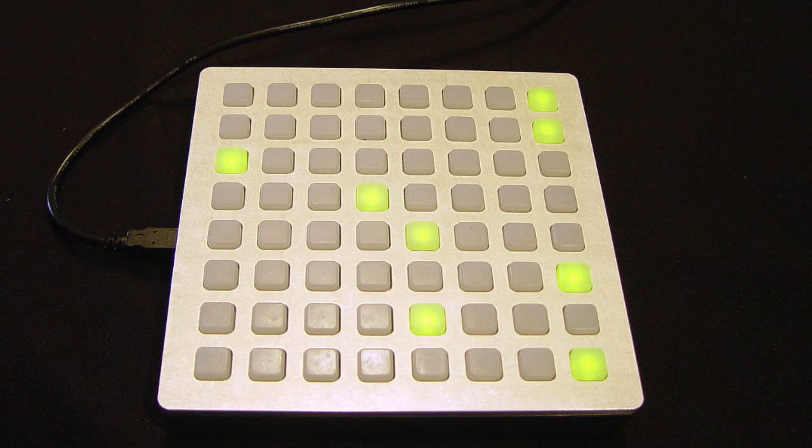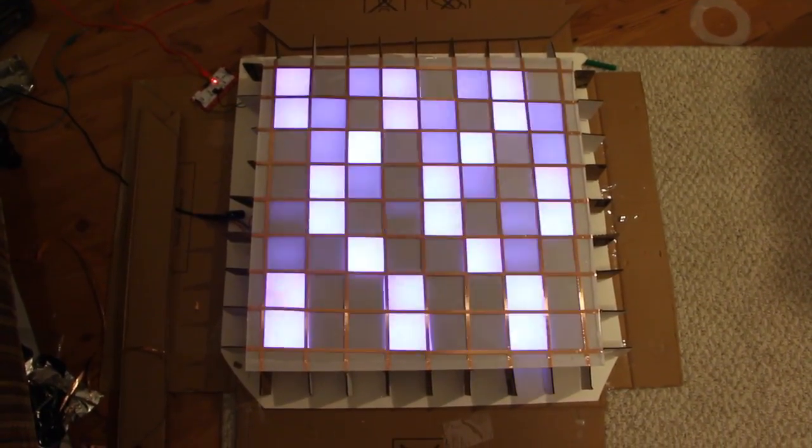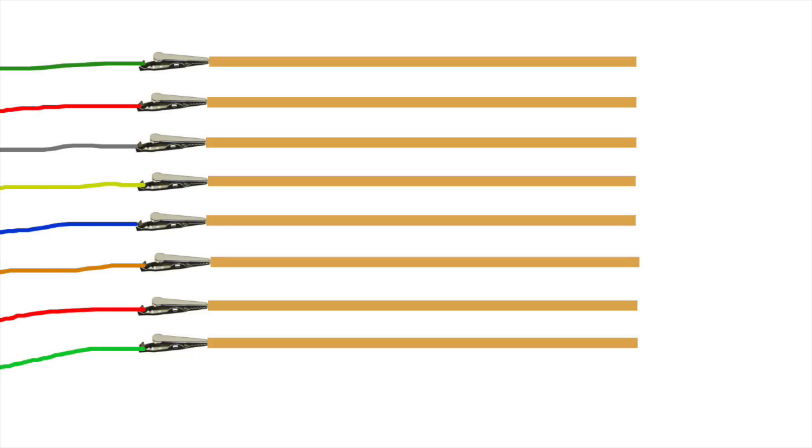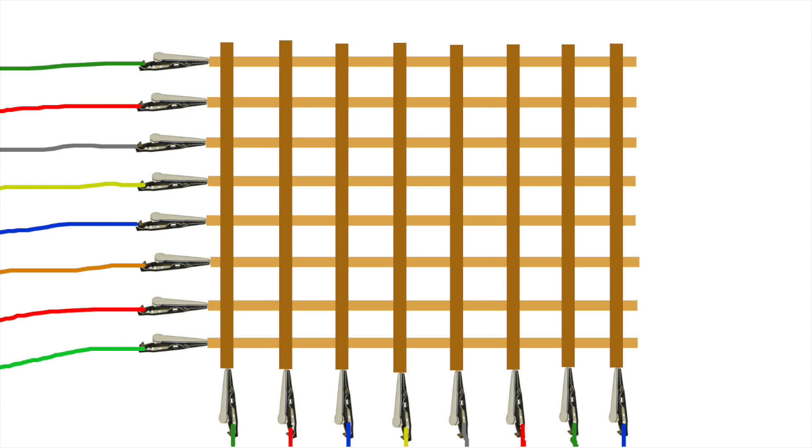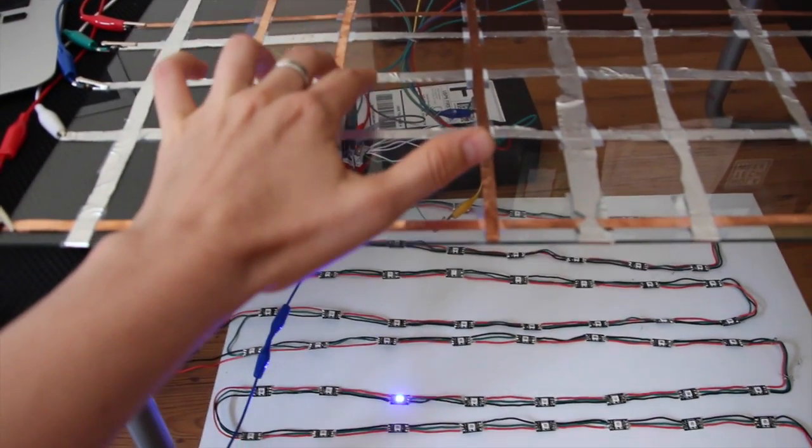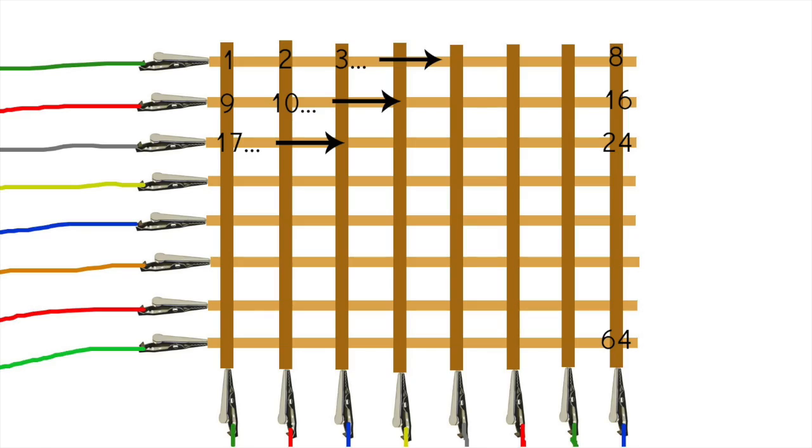We want to build an 8x8 monome that has 64 buttons, but the Makey Makey only has about 20 inputs. The solution is to multiplex the rows and columns. We create 8 rows and 8 columns of copper tape, each line connected to its own alligator clip, and by grounding the intersection of a row and a column, we trigger a unique key. There are 64 intersection points that can be triggered using just 16 Makey Makey inputs.